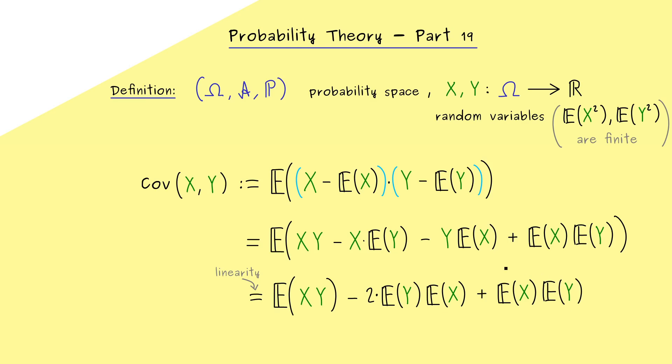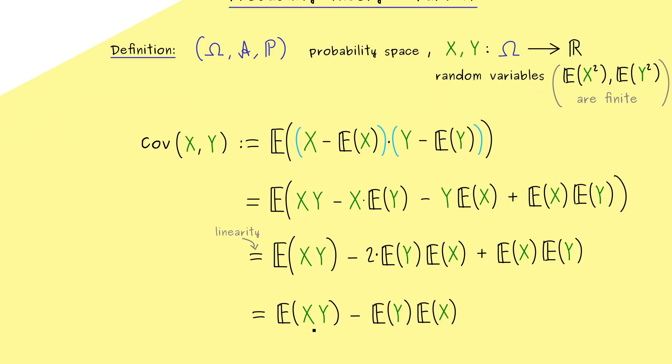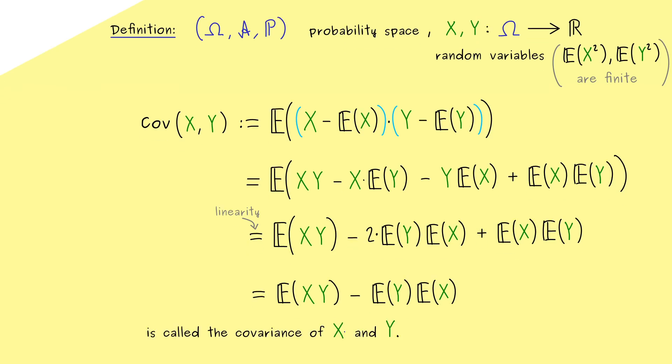However, now you see, we can put both terms together. And we get a very nice short formula for the covariance. So you can remember, it's the expectation of the product minus the product of the expectations. So again, by our assumption, this real number is well defined and called the covariance of X and Y.